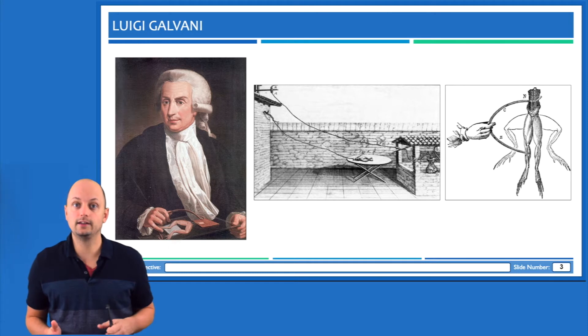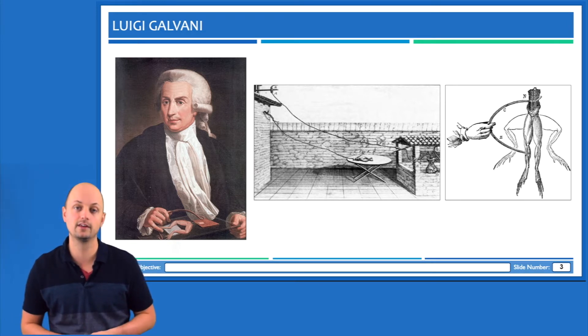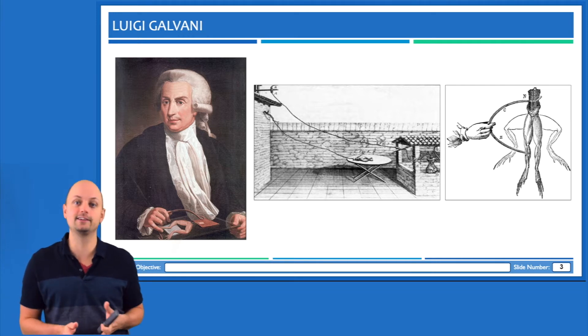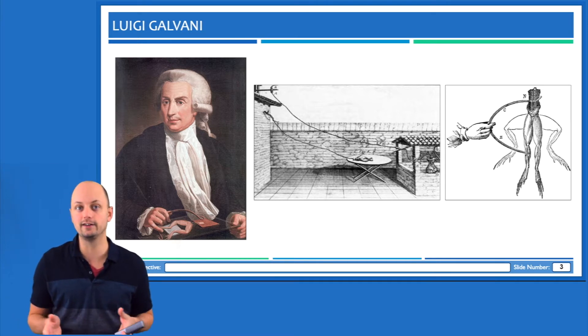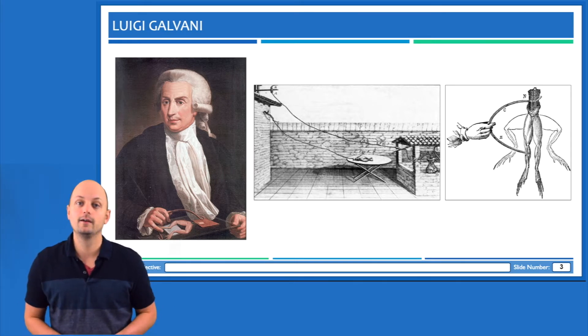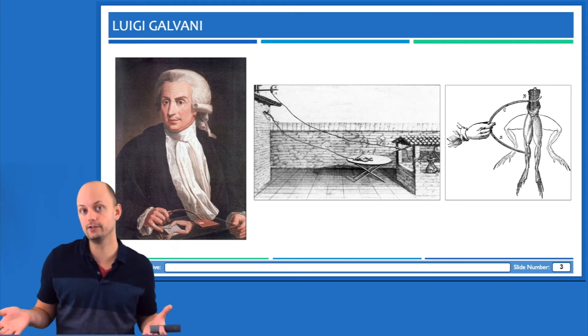So excitability is the basis of the field of electrophysiology, which has really become the bread and butter of most neuroscience research in the past 30 or so years. The father of electrophysiology is pictured here on this slide. His name is Luigi Galvani, and he lived during the 1700s. Now, the 18th century was kind of an interesting time to be a scientist. In a way, it's not so different than today.